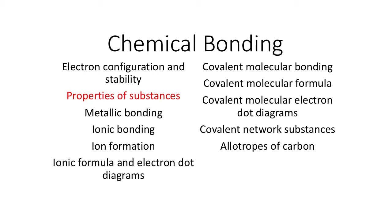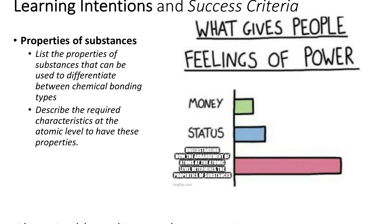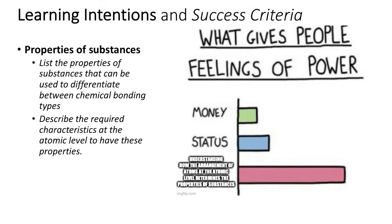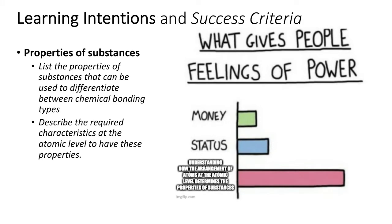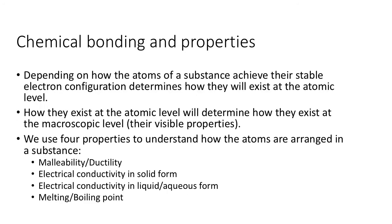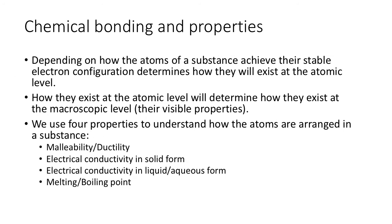Hi, you're 11. This is Mr. Lim here again, and this is our second video on chemical bonding about the properties of substances. So we're going to learn what properties we can use to differentiate between things and the required characteristics that they have.